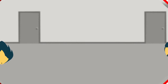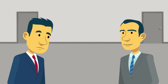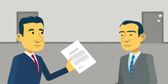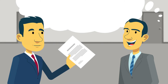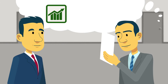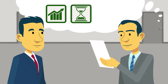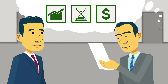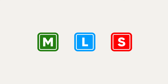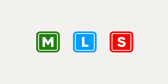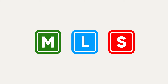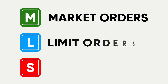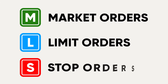You can think of stock orders as instructions for your trading broker. You use them to let your broker know what stocks to buy or sell for you, when to do it, and at what price. There are three basic types of orders that we'll explain in this video: market orders, limit orders, and stop orders.